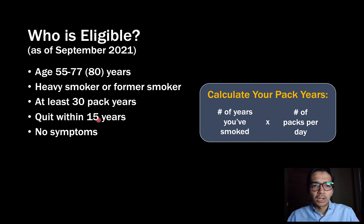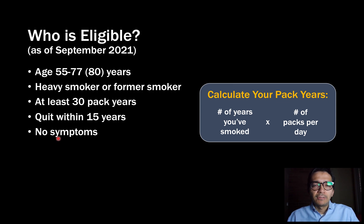Finally, you have to have no new respiratory symptoms. To explain this: for breast cancer screening, you go in for your yearly mammogram, but if you suddenly feel a new lump, you'd have diagnostic breast imaging with specialized views and possibly an ultrasound rather than a screening mammogram. The same is true for lung cancer screening — if you have a new cough, are coughing up blood, or have hoarseness, that might increase suspicion for lung cancer and you'd want a chest CT with contrast instead. That's why no new symptoms is a requirement.